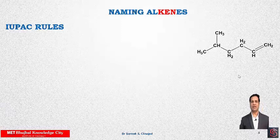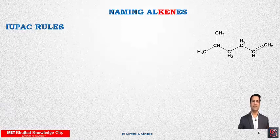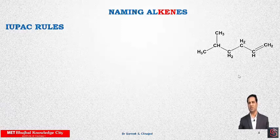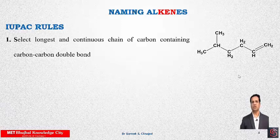Now we will discuss how to name alkenes. When comparing alkanes and alkenes, there is a carbon-carbon double bond present in alkenes. Most rules from alkane naming still apply, but we cannot ignore the double bond. The chain selected must contain the double bond, and numbering must be done so that the double bond has the lowest possible number. These two things are very important in naming alkenes.